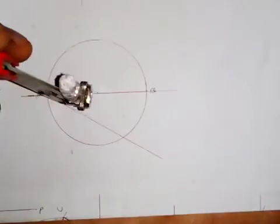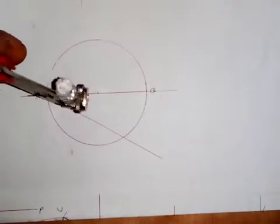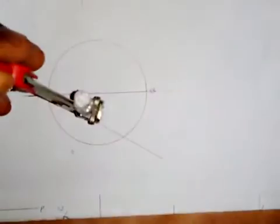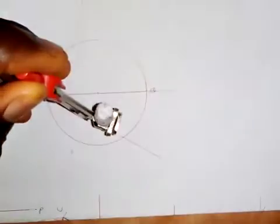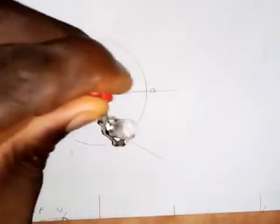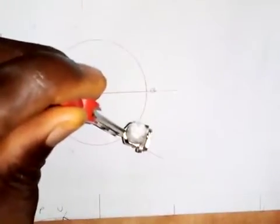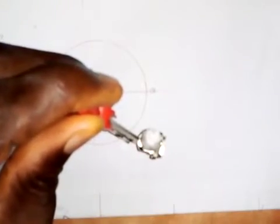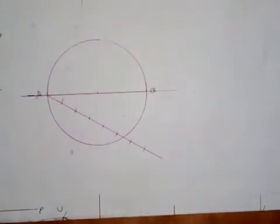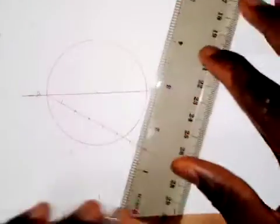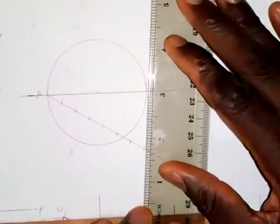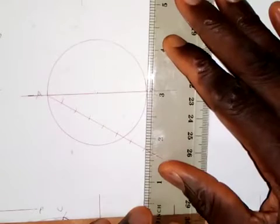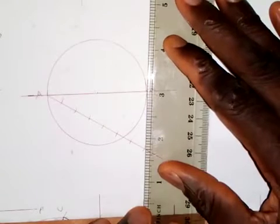So this is one, this is two, this is three, this is four, this is five, this is six, and this is the seventh one. So we have one to seven.